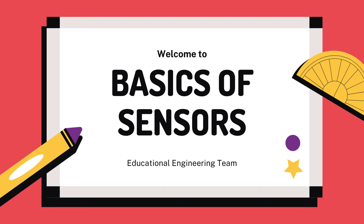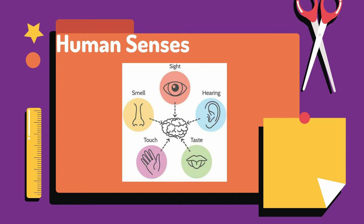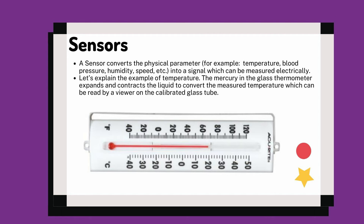We are on the last part of our topic for lesson one, which is the basics of sensors. For the human senses, as we all know, we have five senses: sense of sight, sense of smell, sense of hearing, sense of touch, and sense of taste. A sensor converts a physical parameter — for example, temperature, blood pressure, humidity, speed, and many more — into a signal which can be measured electrically.